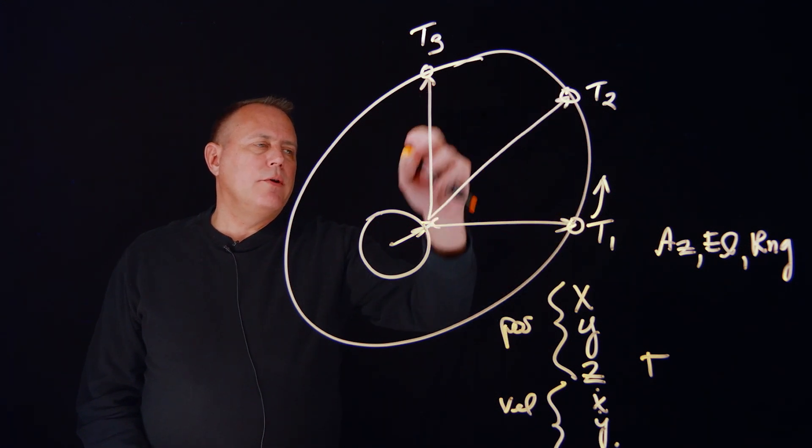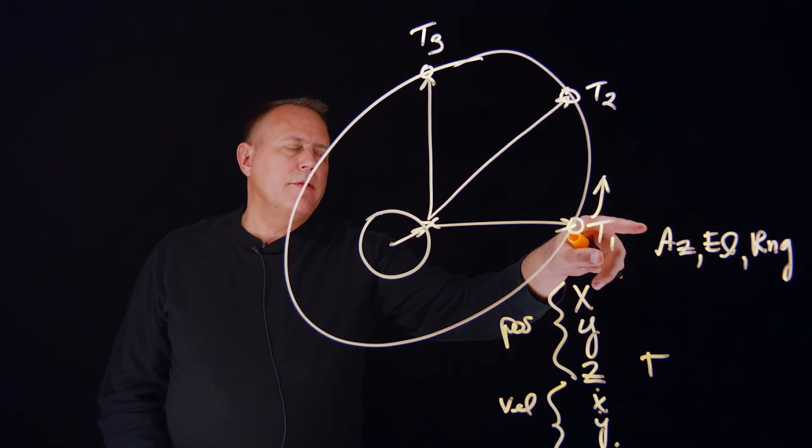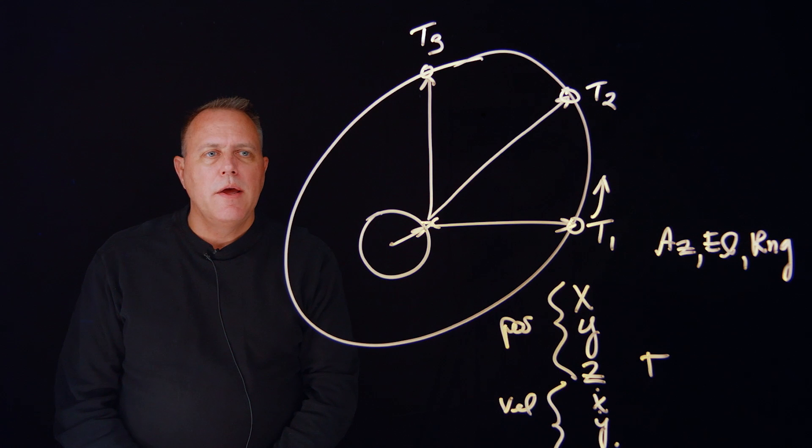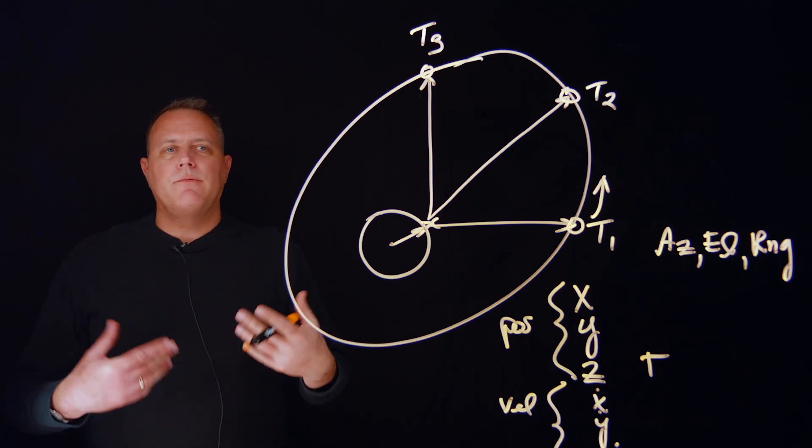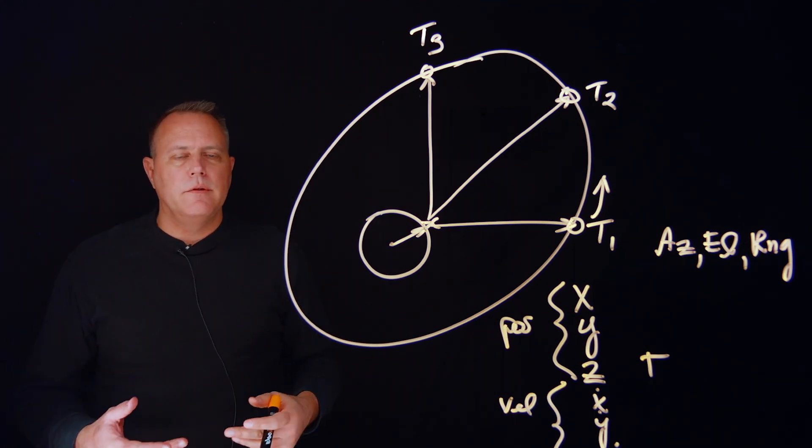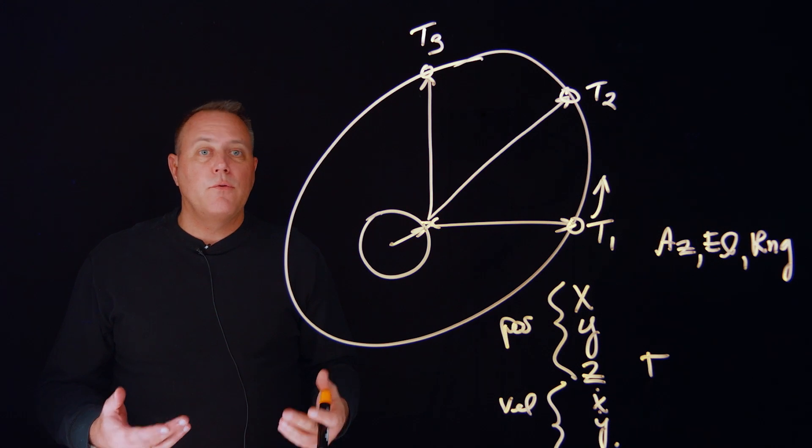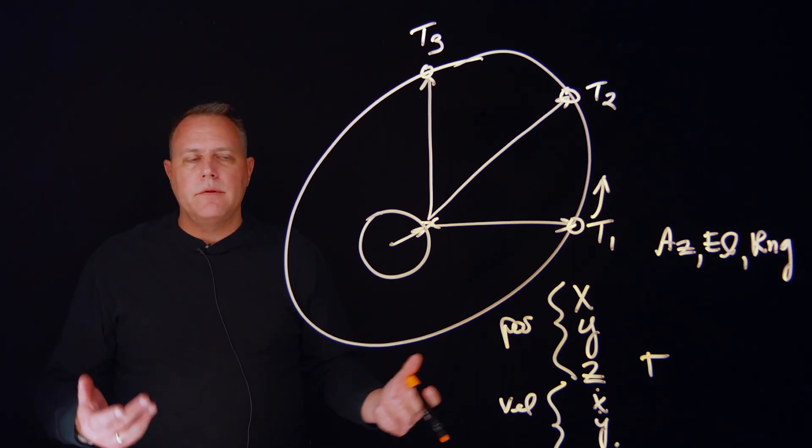So with my three points here, I now have three sets of azimuth, elevation, and range measurements. And I can make some assumption about the forces acting on my spacecraft. And sort of in the grossest sense, it's gravity, and that's the dominating force.